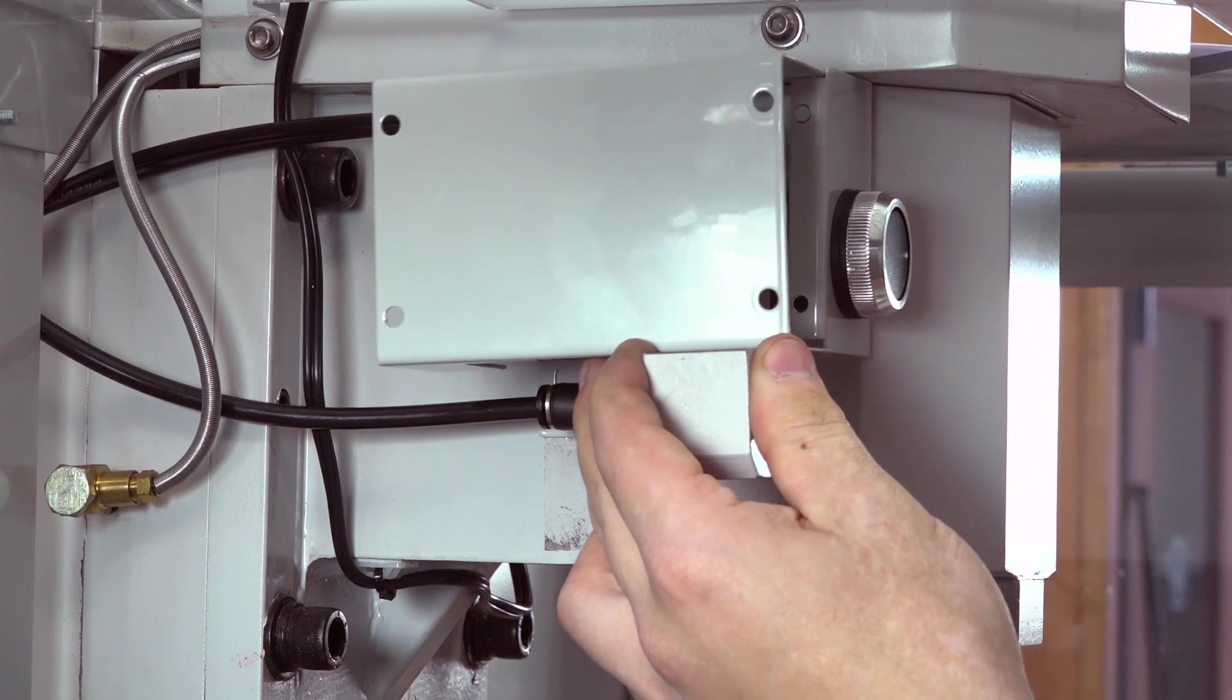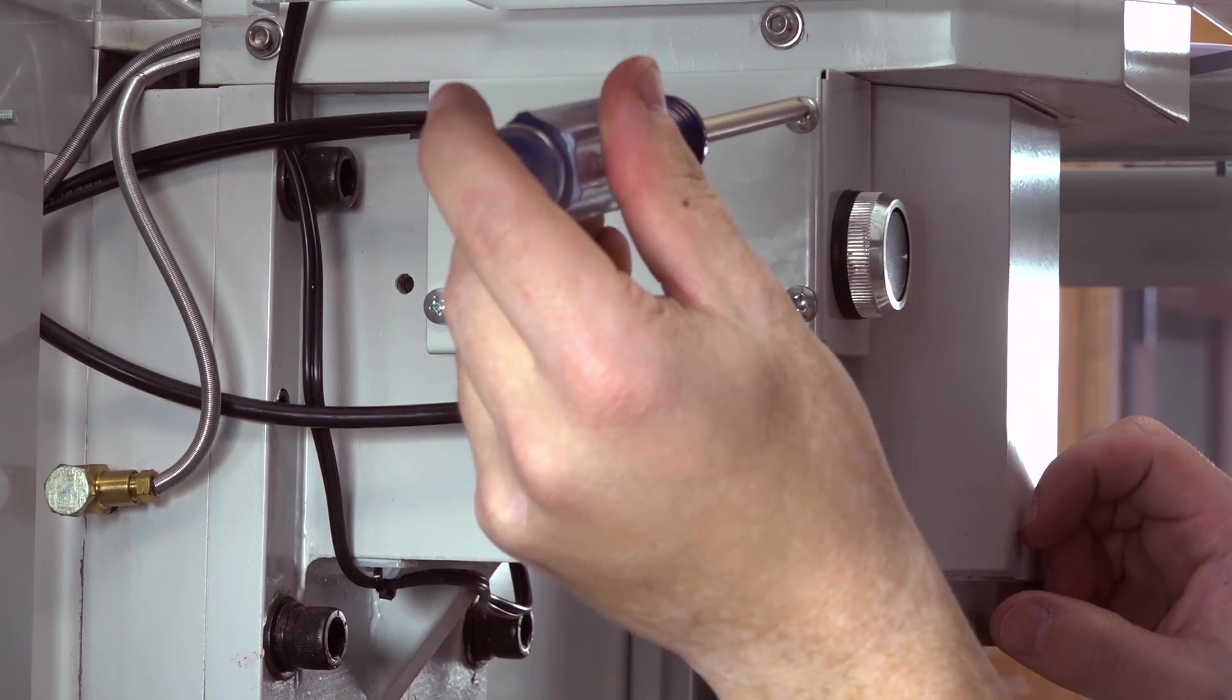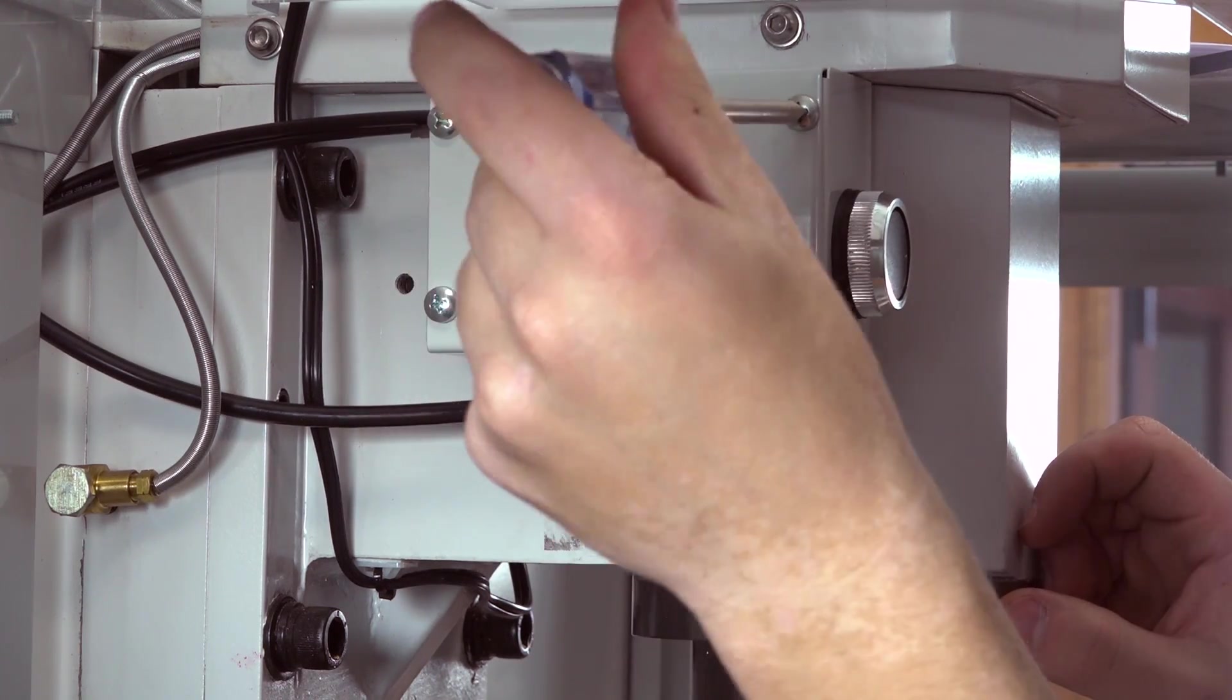Use a number 2 Phillips screwdriver to attach the button box assembly to the button box base with 4 M5 Phillips head screws.